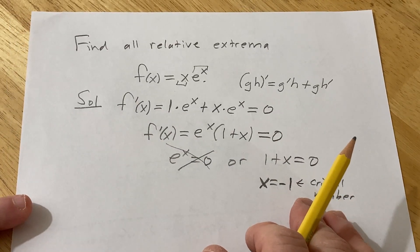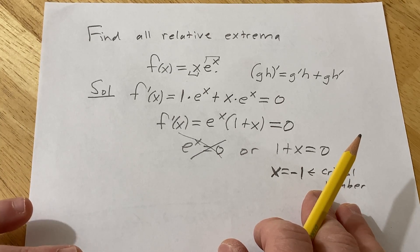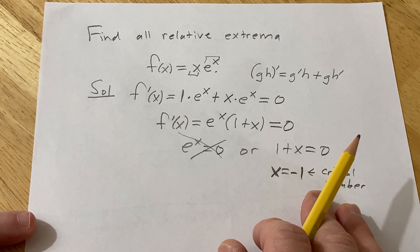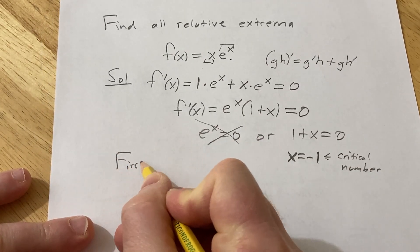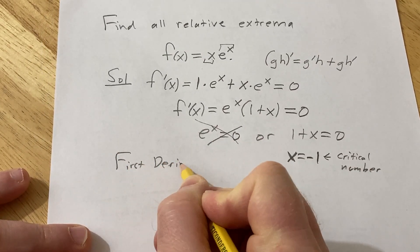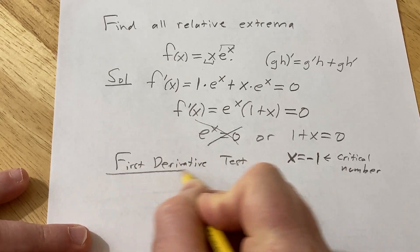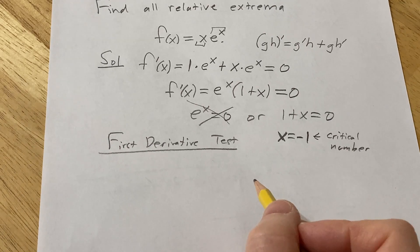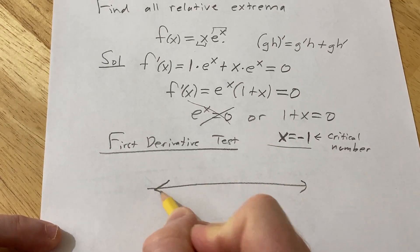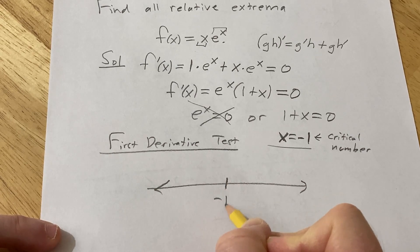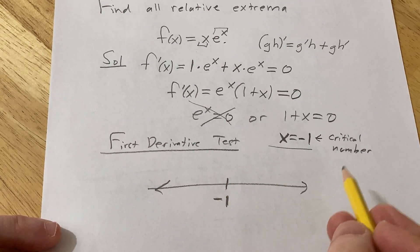We have two ways to proceed: we can use the first derivative test or the second derivative test. Let's use the first derivative test. The first derivative test says we take our critical number and plot it on a number line. Then we test whether the derivative is positive or negative on each side.